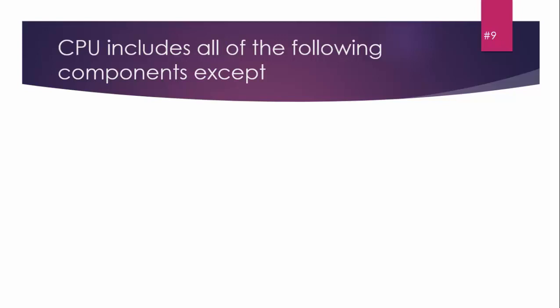MCQ number nine: CPU includes all of the following components except: A) Primary storage, B) Control unit, C) ALU, D) Register. The answer is Primary storage, because primary storage is not part of the CPU. It is not located inside the CPU.